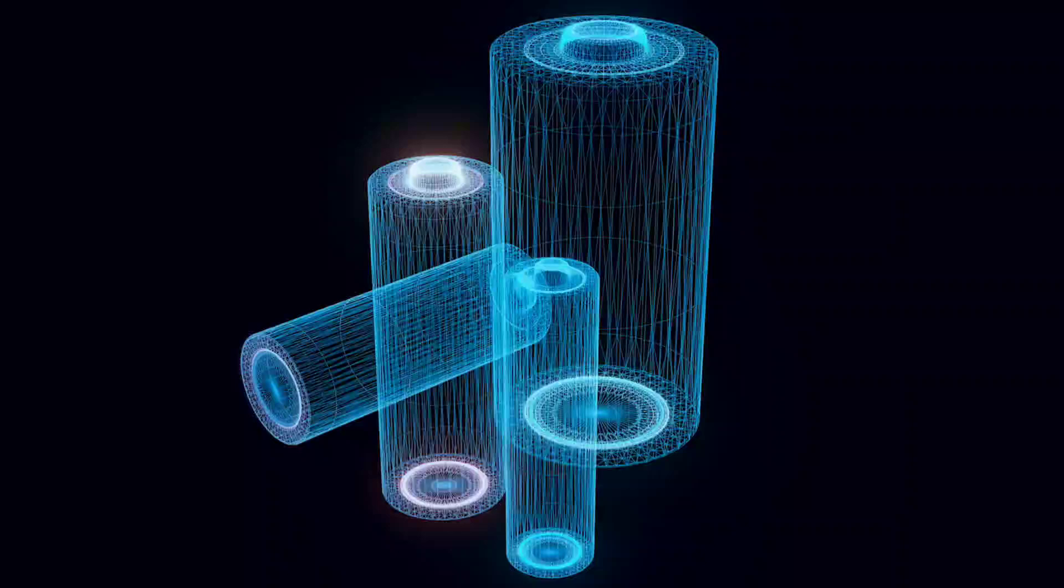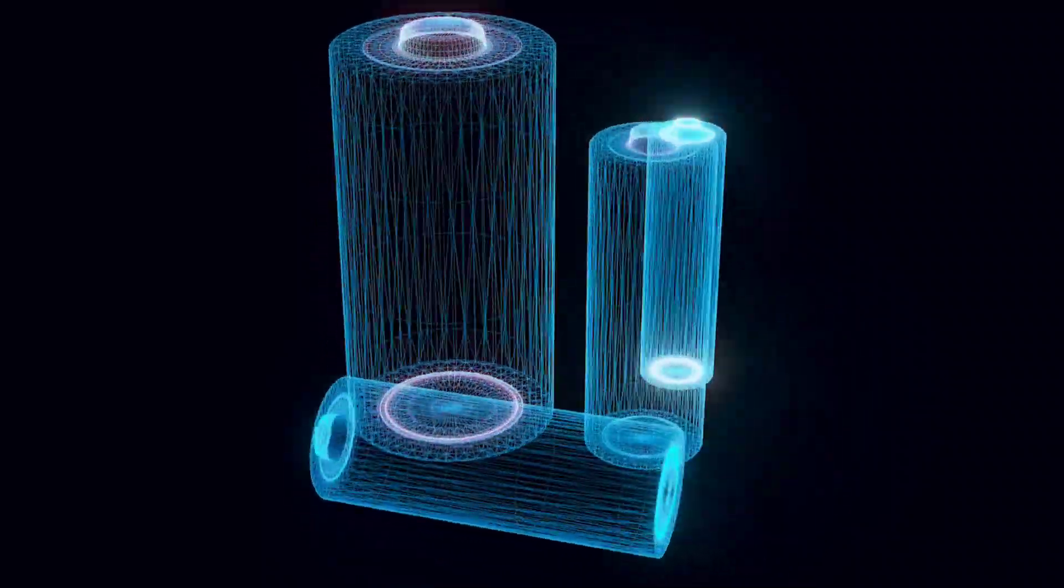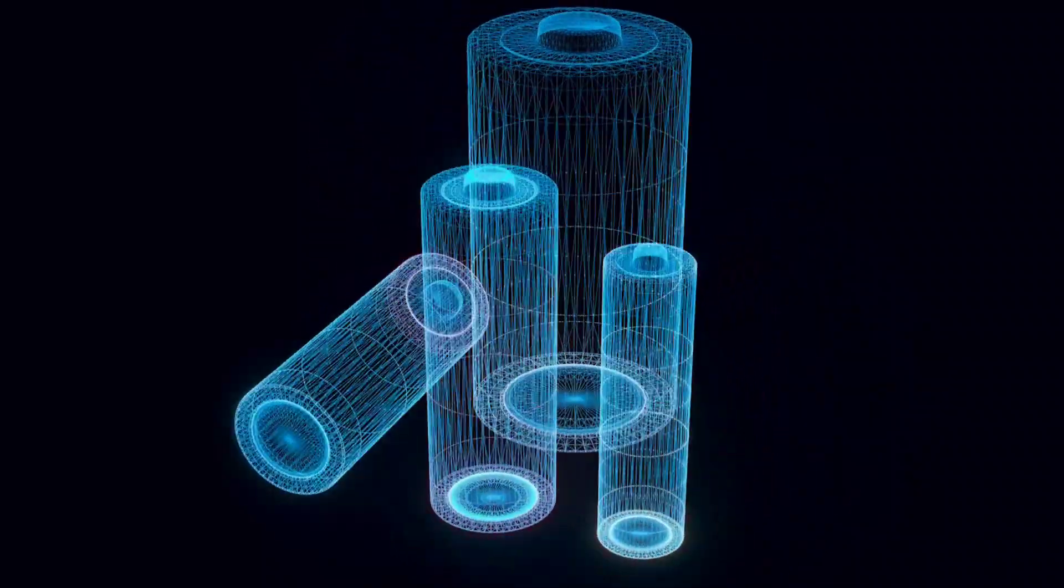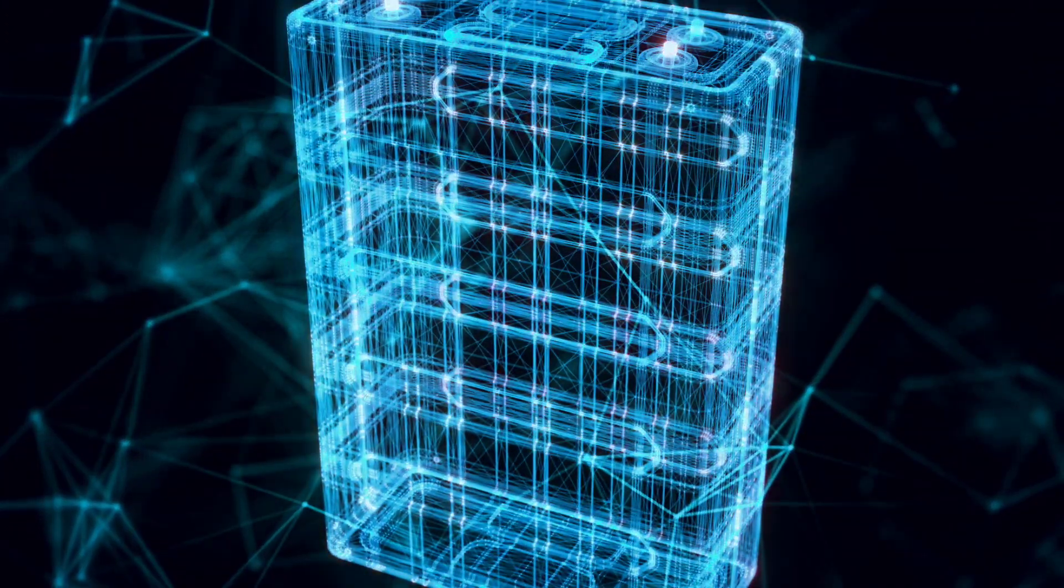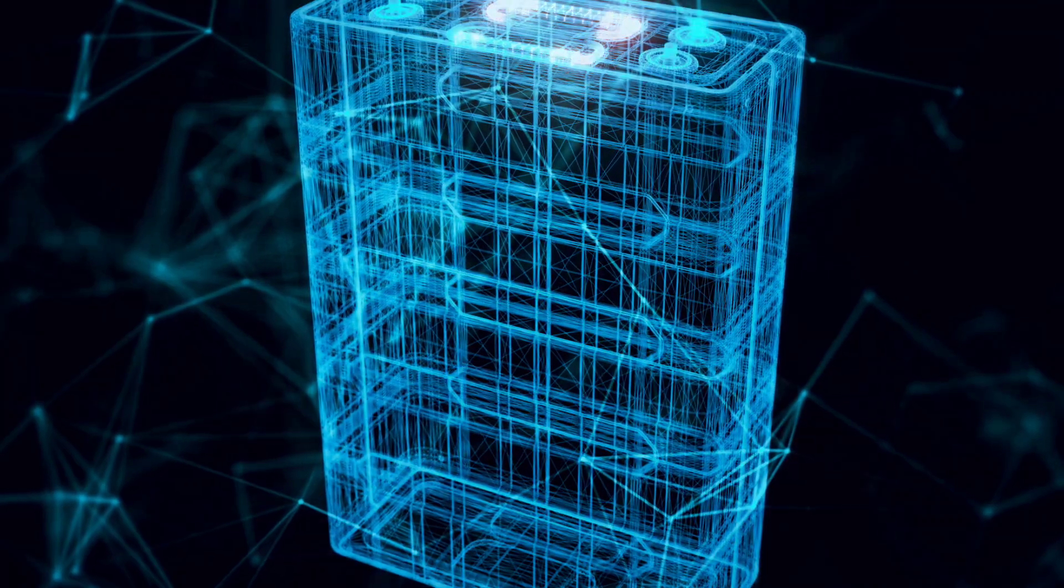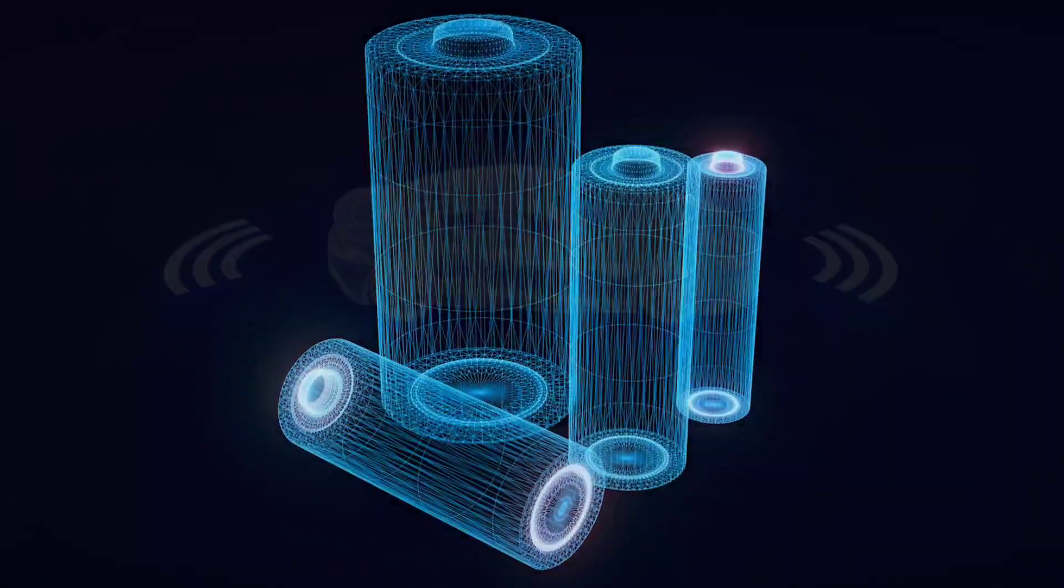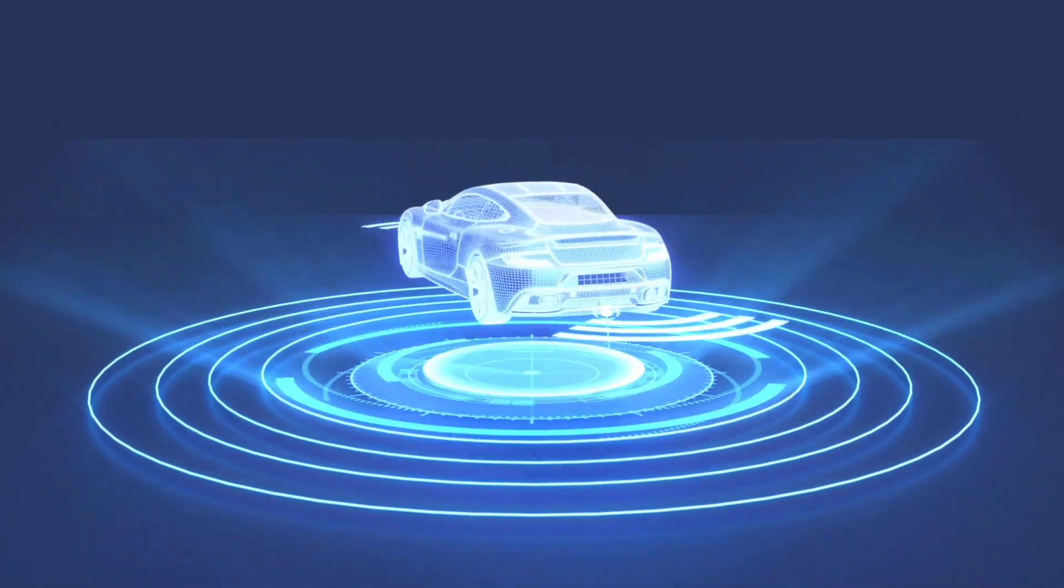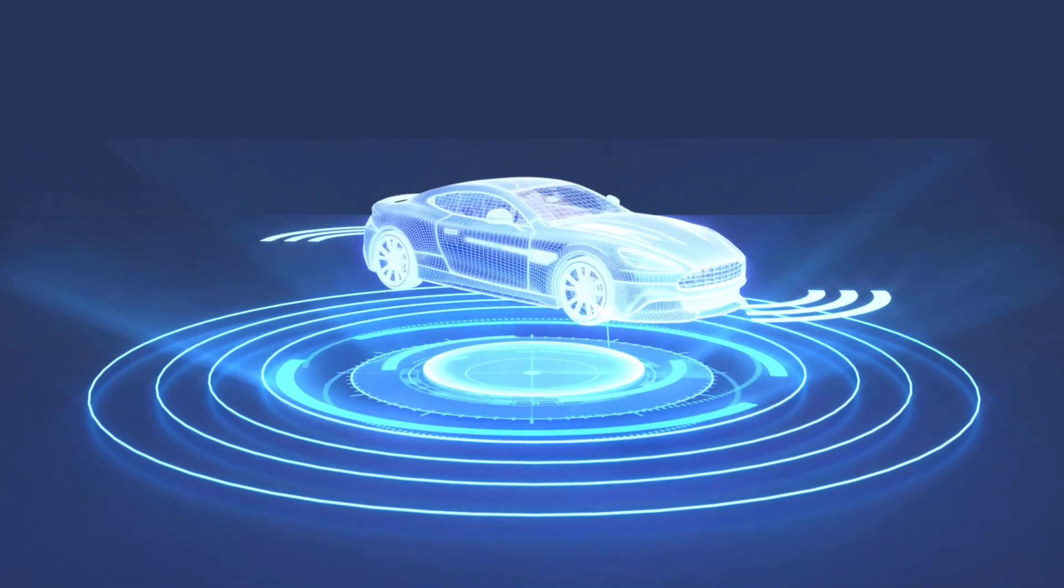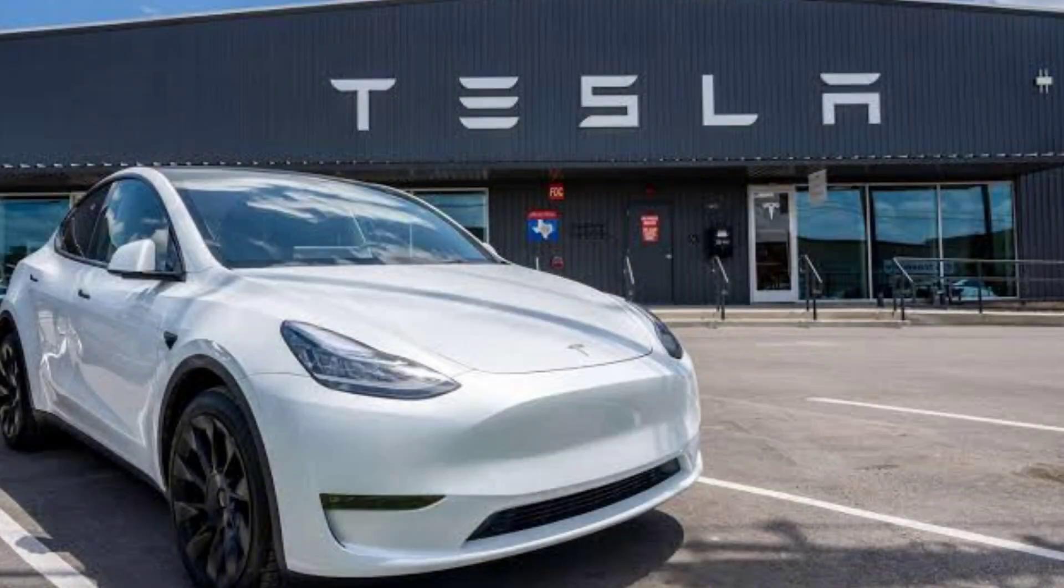Tesla's 4680 battery is a game-changer, bigger, better, and more powerful. At 46mm by 80mm, this cylindrical cell reduces the number of individual cells needed. Instead of traditional metal tabs, Tesla uses a tabless electrode for better conductivity and faster charging. What's even more impressive is that Tesla's 4680 battery isn't just a power source. It's part of the car's frame, making the vehicle lighter and more efficient. The result? Higher energy density, better performance, and extended range. That's why Tesla vehicles have some of the longest ranges on the market.